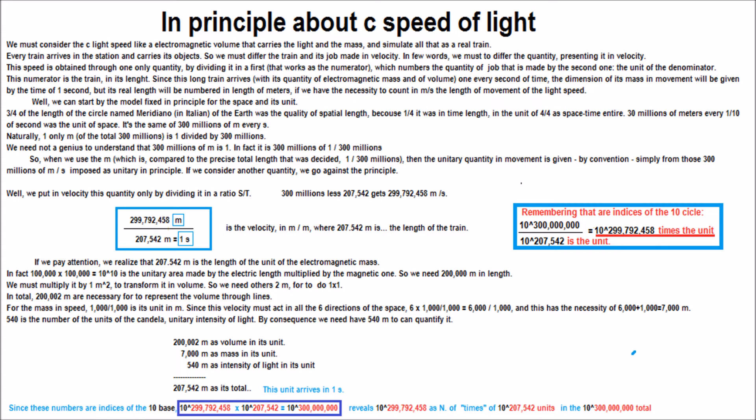Back out one quarter it was in time length, in the unit of four quarters as space-time entire. As well, Al millions of meters every one tenth of second was the unit of space! It's the same of 300 millions of m every S.